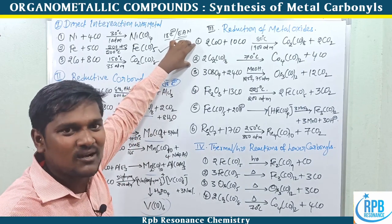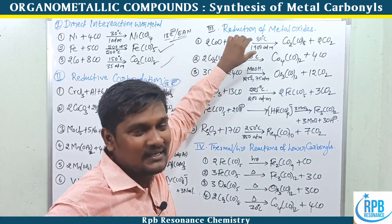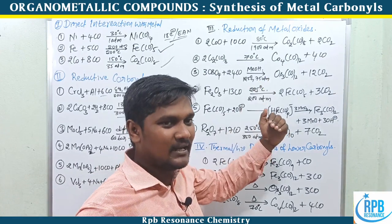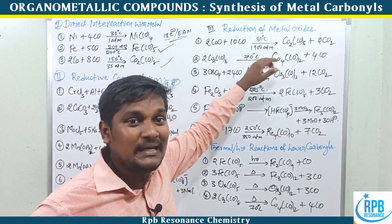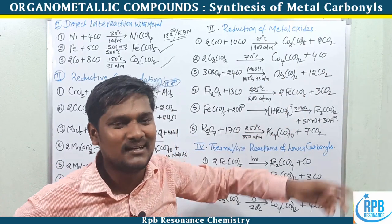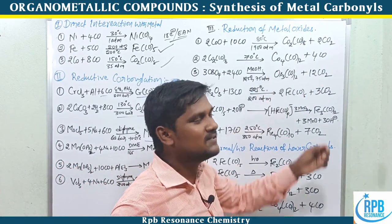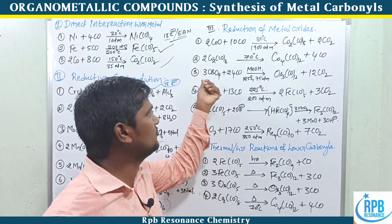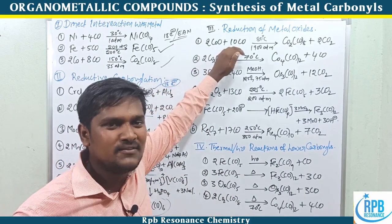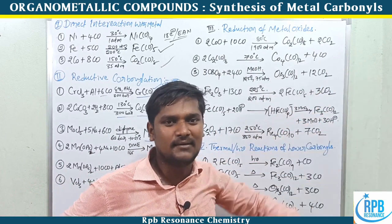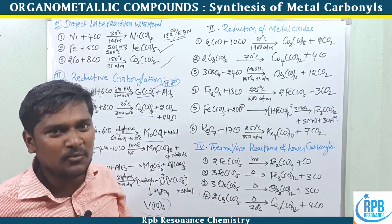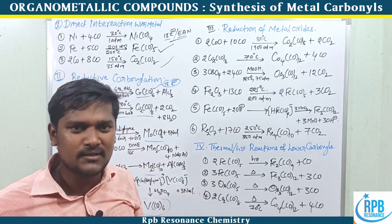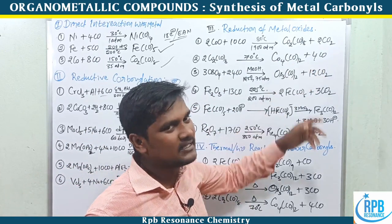Dicobalt octacarbonyl, Co2(CO)8, treated at 70°C (thermal condition) undergoes dimerization of the dimer — forming a tetramer, Co4(CO)12, with three bridging carbonyls. So cobalt carbonyls can exist as dimer, trimer, or tetramer, but not as a monomer.